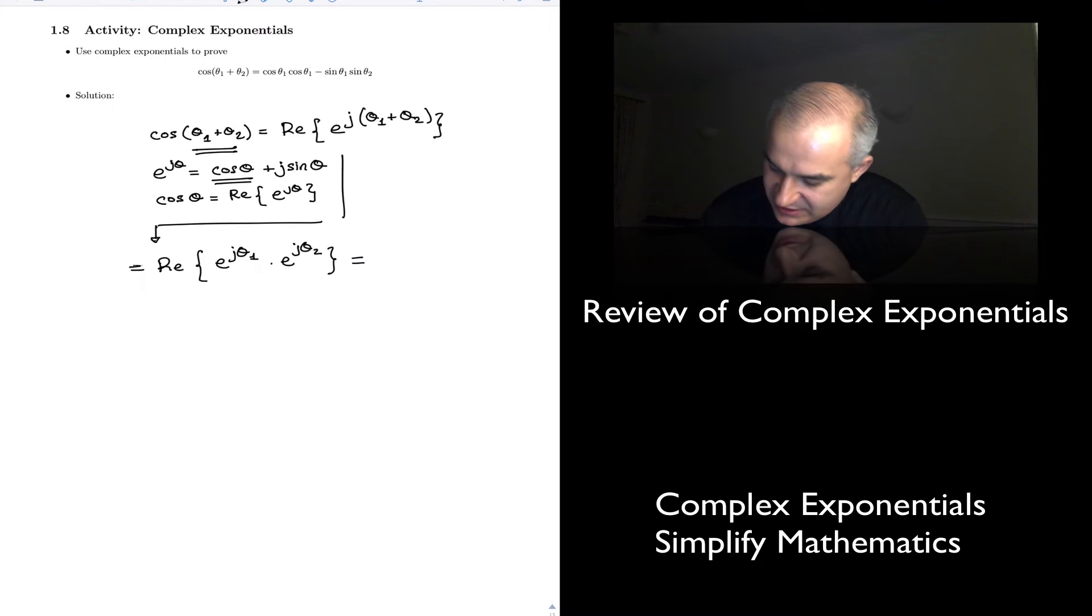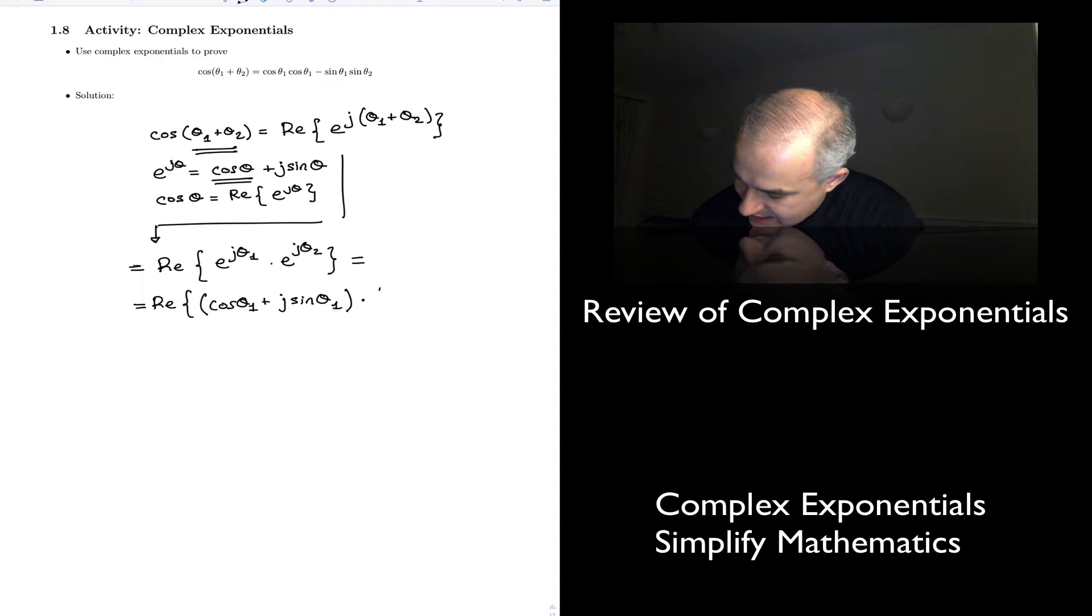Now we can convert them back if we want and just work out the math. Real of the real part of cosine of theta 1 plus, so this is j sine of theta 1. I'm just using the Euler formula times cosine of theta 2 plus j sine of theta 2. So again, we're using Euler formula here.